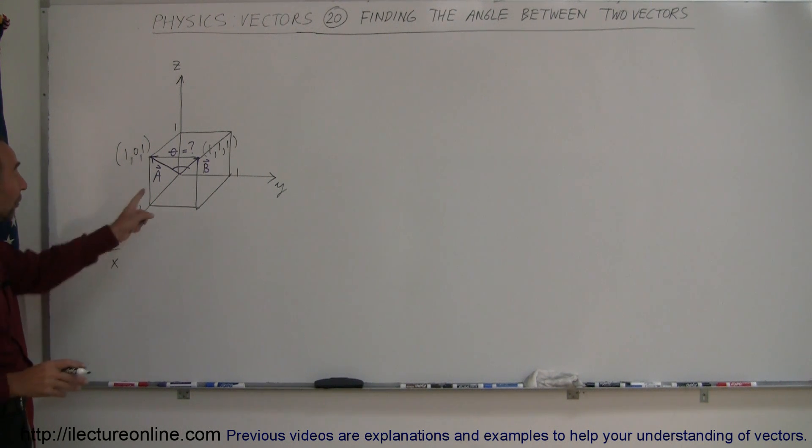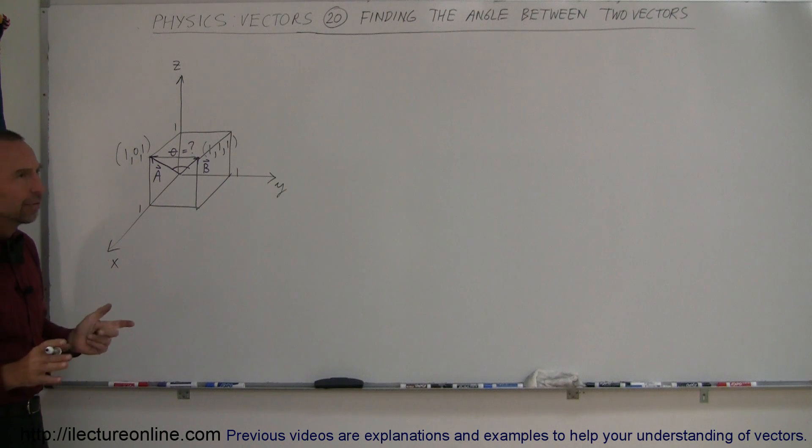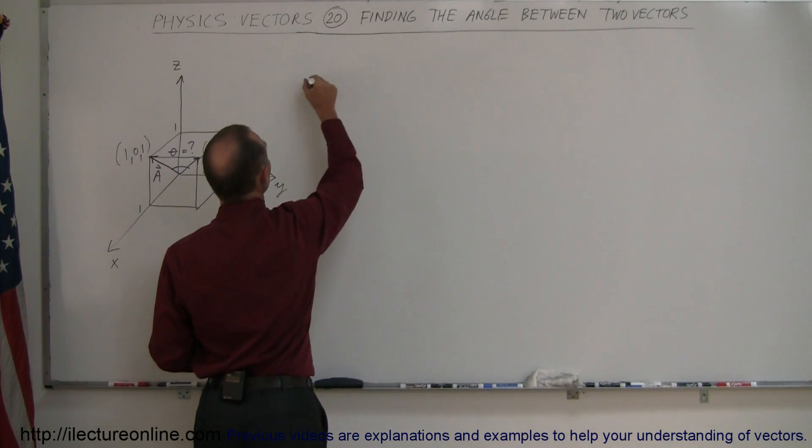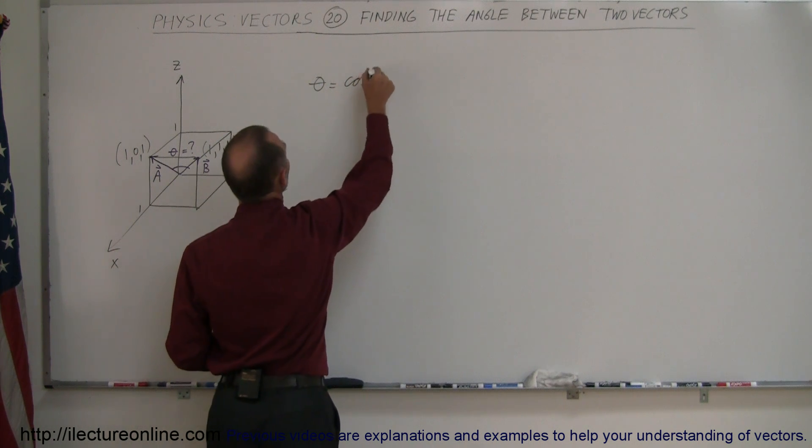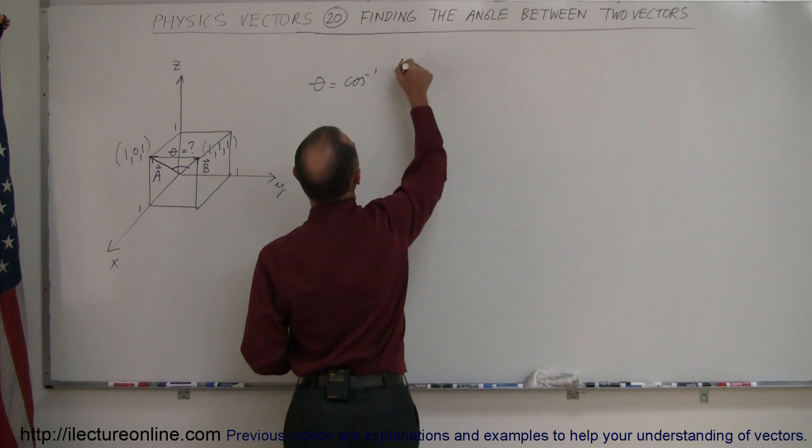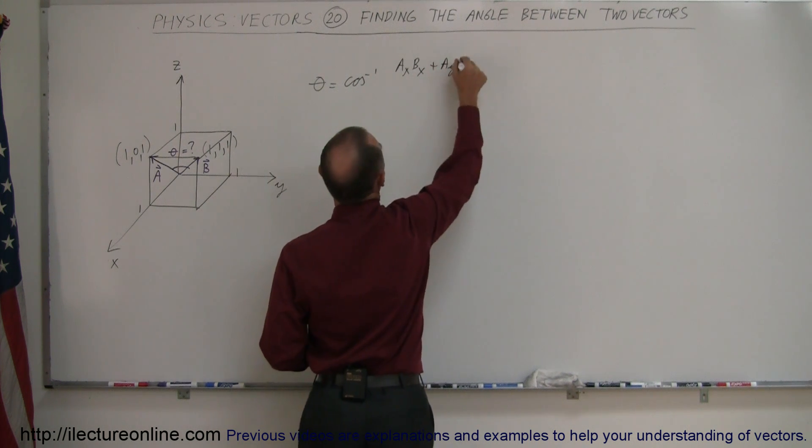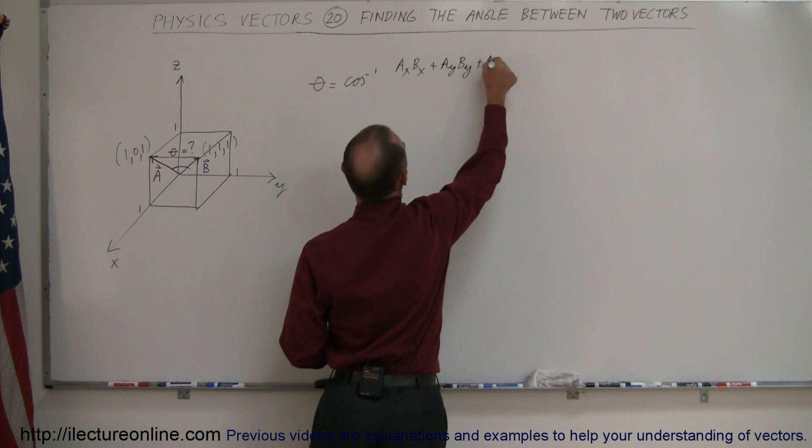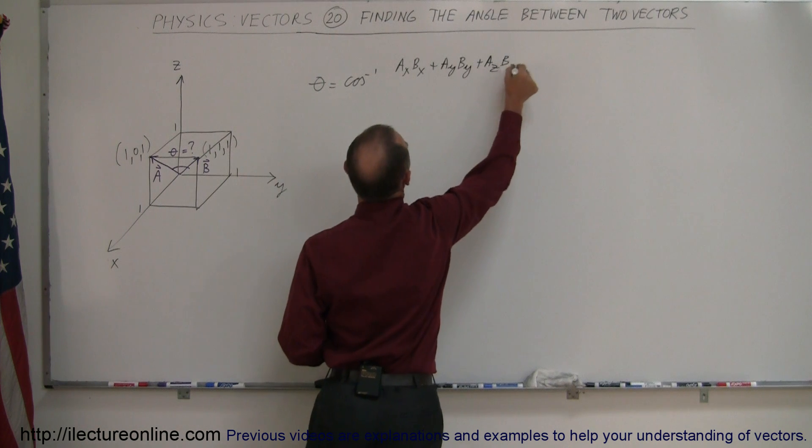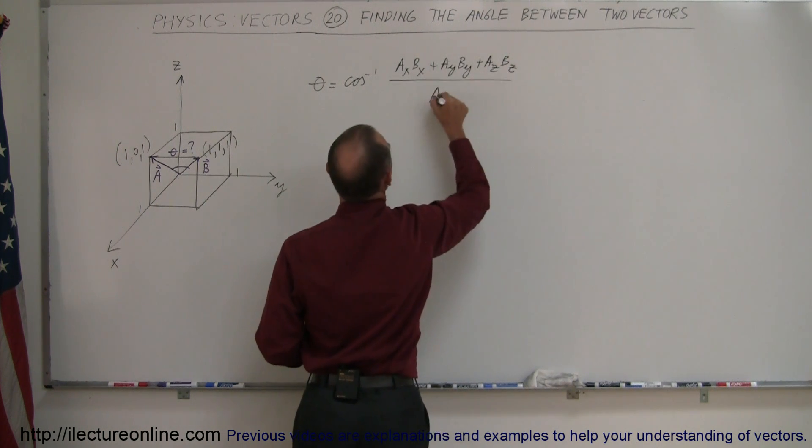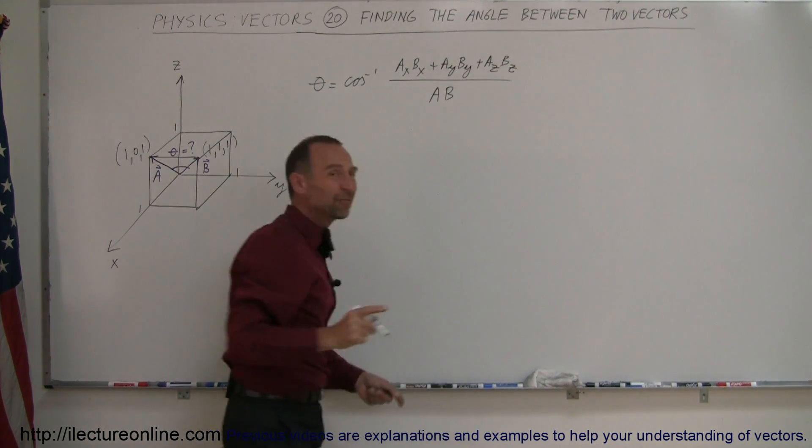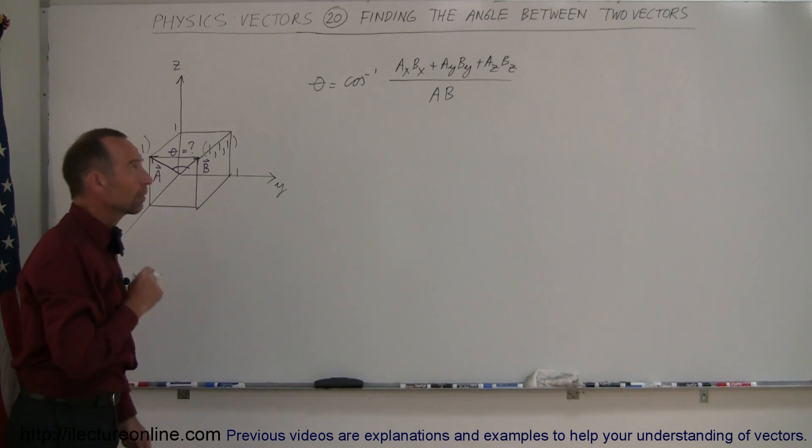Now what is the angle theta between those two vectors? If we remember how to do that, we know that the angle is equal to the arc cosine of A_x·B_x + A_y·B_y + A_z·B_z all divided by the magnitude of A times the magnitude of B. That came from the definition of a dot product.